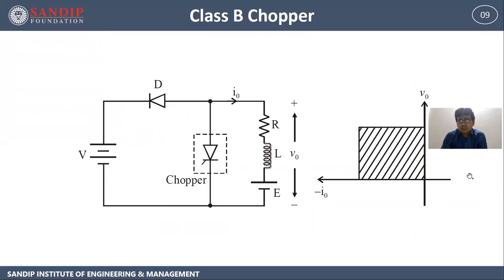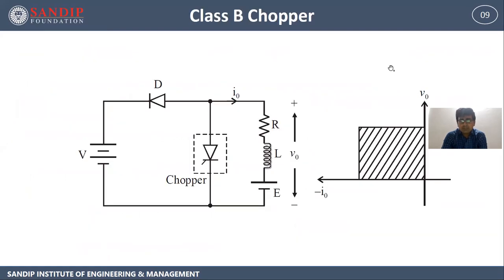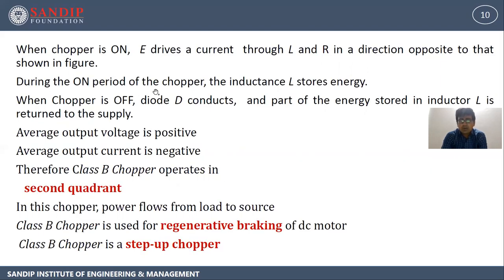Next is class B chopper. This is the circuit diagram for that. We have the fixed DC source, diode, chopper, and load. When chopper is on, E drives a current through L and R in a direction opposite to that as shown in the figure. During the on period of the chopper, the inductance L stores energy. When chopper is off, diode D conducts and part of the energy stored in inductor L is returned to the supply. Average output voltage is positive, average output current is negative. Therefore, class B chopper operates in the second quadrant, and power flows from load to source. Class B chopper is used for regenerative braking of DC motor and is a step-up chopper.